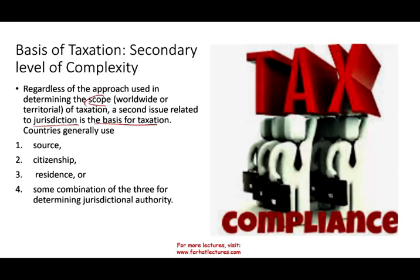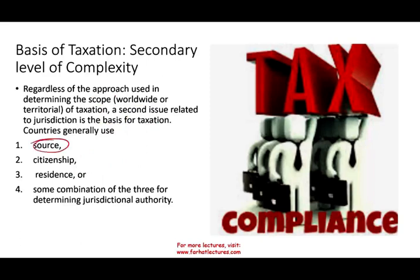For example, the scope could be worldwide combined with citizenship — meaning the country taxes any income you earn anywhere in the world as long as you are a citizen. Or a country could use worldwide scope combined with citizenship and residency, making it even harder to avoid taxation. Obviously, all countries use source as a base — if you're making money in a jurisdiction, you're paying taxes there.